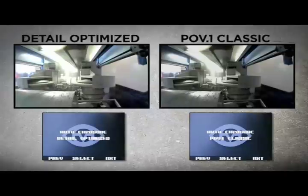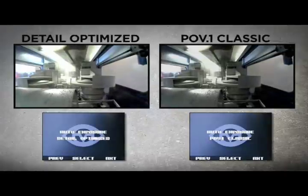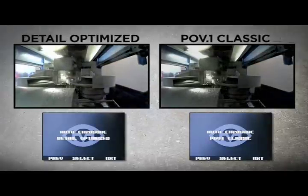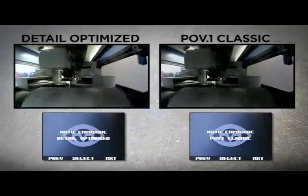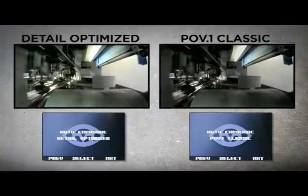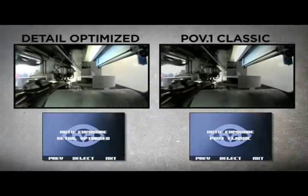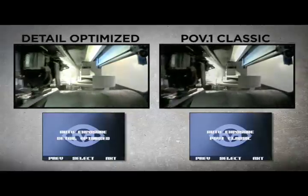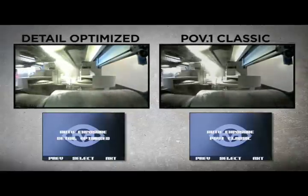Detail Optimised is similar to the Colour Optimised setting but provides for increased detail in the darkest areas of the scene. This setting creates brighter filming results when compared to Colour Optimised.